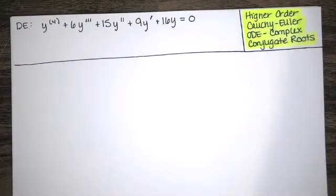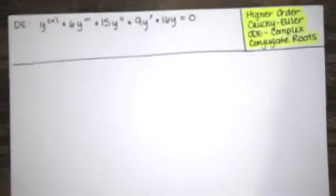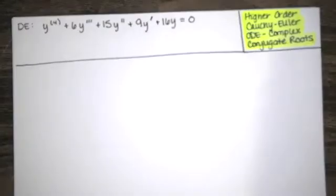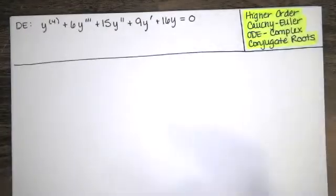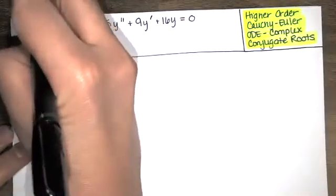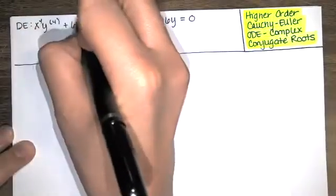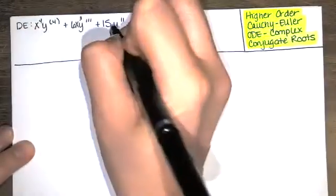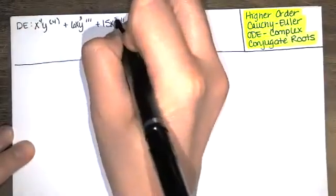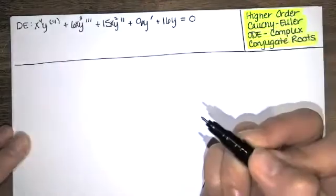In this video we solve a higher order differential equation that happens to be a fourth order differential equation. There should be an x to the fourth there and an x cubed, an x squared, and an x. There we go.